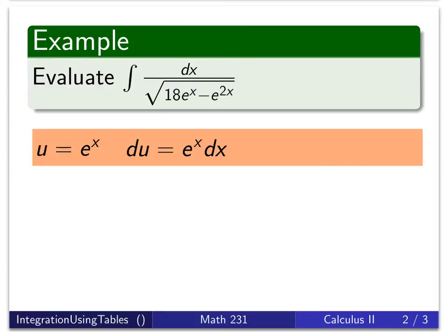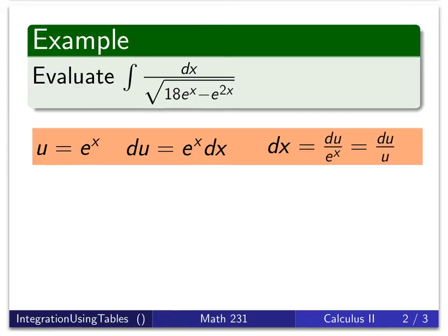Now initially we might panic because I don't see the e to the x up there with the dx. But e to the x is equal to u. So I'm going to first solve for dx. dx is du over e to the x just by dividing by e to the x. And I replace e to the x by u. So where I see the dx up in the integral, I can replace that by du over u.